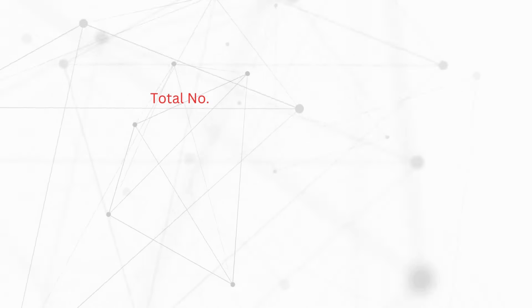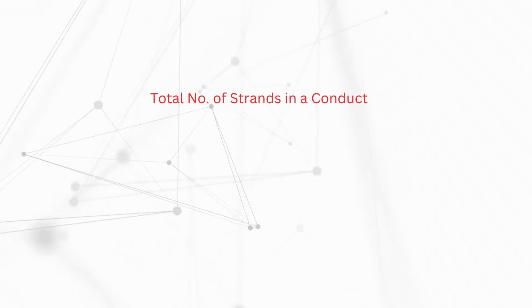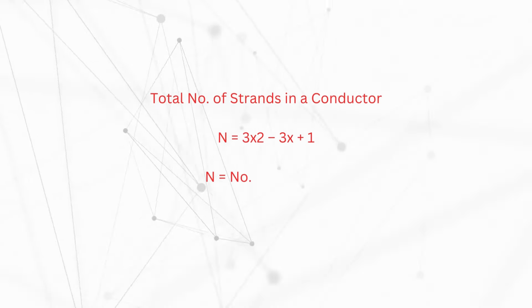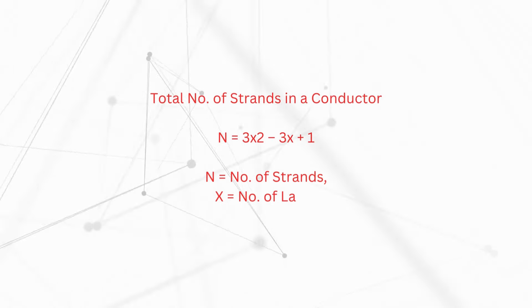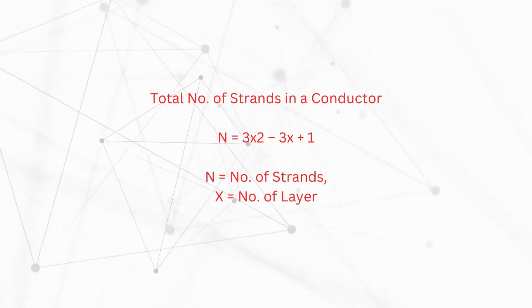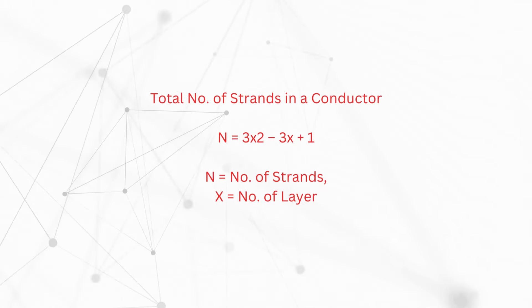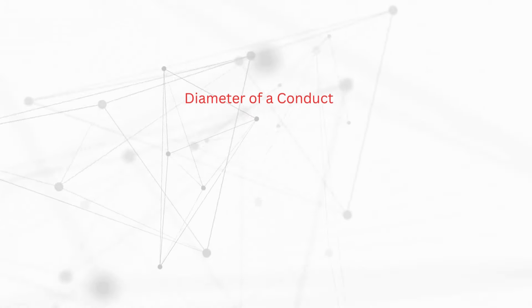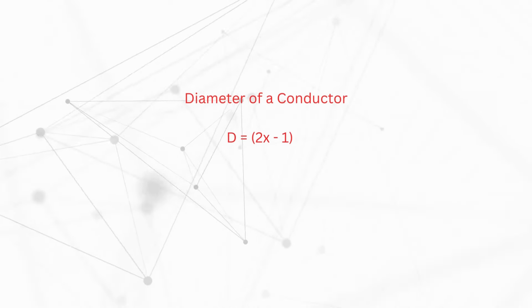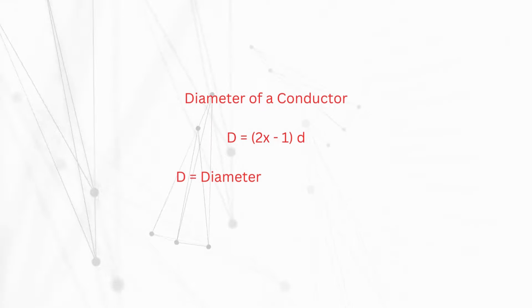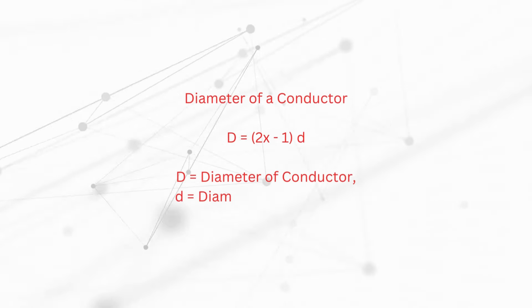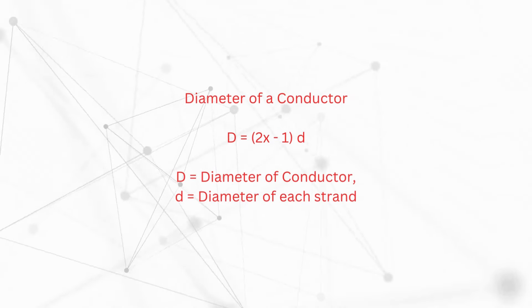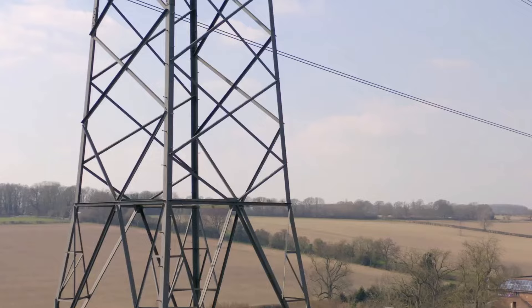The total number of strands in any conductor is determined by a specific formula: n = 3x² - 3x + 1, where n represents the total number of strands and x represents the number of layers in the stranded conductor. Similarly, the diameter of the conductor can be calculated using another formula: D = (2x - 1) × d, where D is the diameter of the conductor and d is the diameter of each strand.